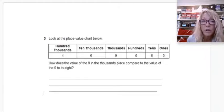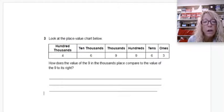Your next question is: Look at the place value chart below. It goes from ones, tens, hundreds, thousands, ten thousands, and hundred thousands. How does the value of the 9 in the thousands place compare to the value of the 9 to its right?